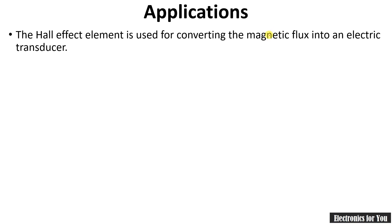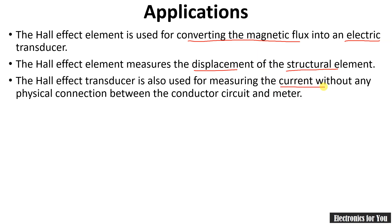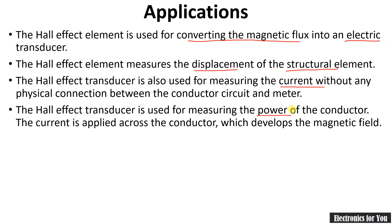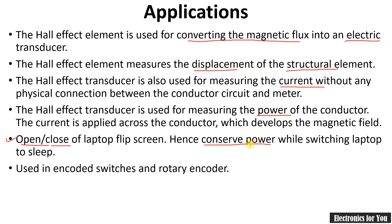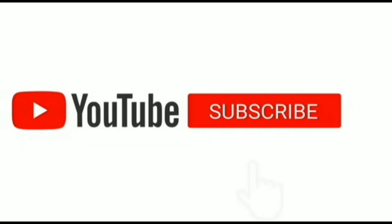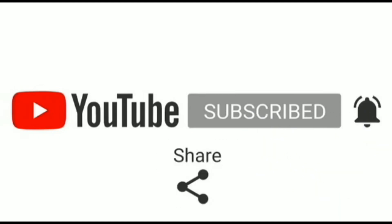For applications, the Hall Effect element is used for converting the magnetic field into electrical signals. It measures displacement, current, and power through a conductor. It can also be used in laptop flip screens for power saving, and in encoder switches and rotary encoders. That's all about the Hall Effect transducer. If you like this video, please give a thumbs up, share with your friends, and subscribe to the channel. Thank you.